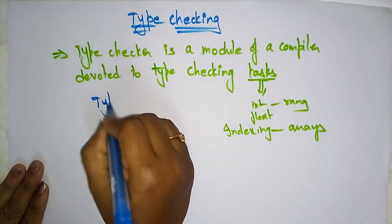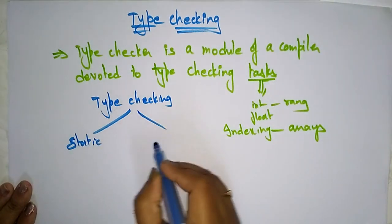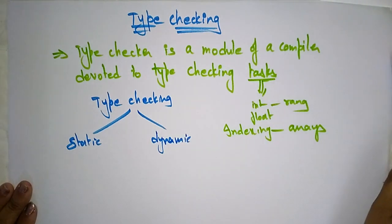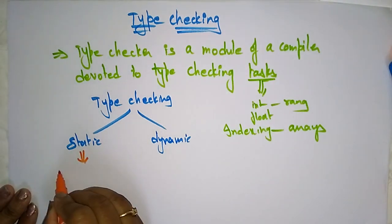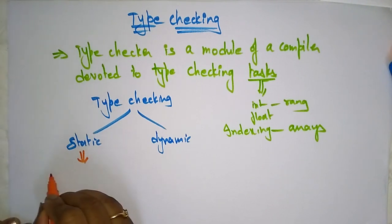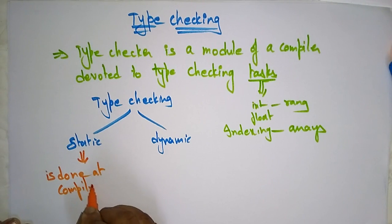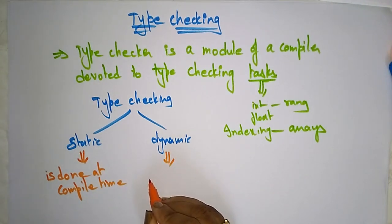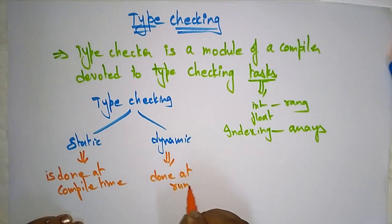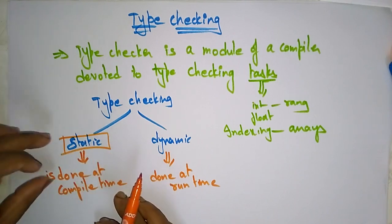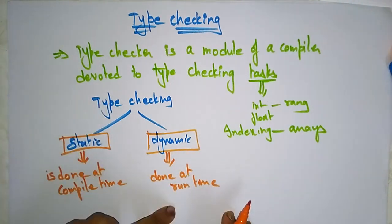Type checking may be either static or dynamic. Static type checking is done at compile time, whereas dynamic type checking is done at runtime. These are important points to remember: static means type checking is done at compile time, and dynamic means type checking is done at runtime.